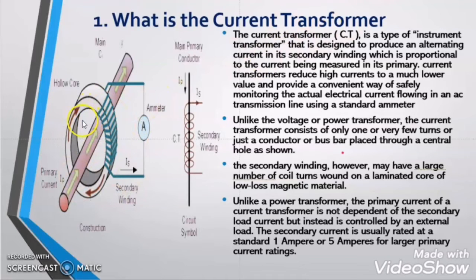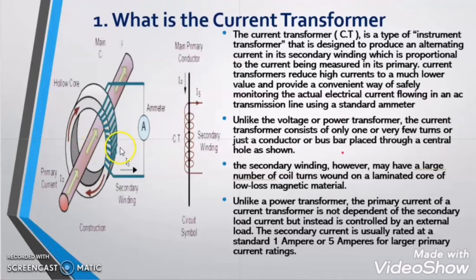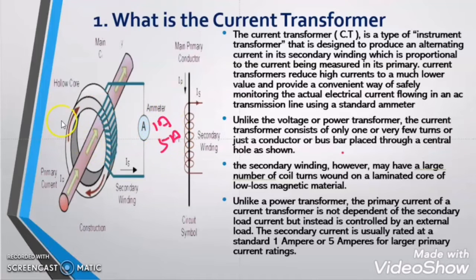To summarize: the current transformer is an instrument transformer used for monitoring or controlling electrical power. It has only the secondary winding; the primary winding is the conductor whose current we need to measure. The CT is always a step-up transformer — stepping up voltage and stepping down current — meaning it has more turns in the secondary winding, and the primary side is either one or two turns. The secondary winding current of the current transformer is always either 1A or 5A — this is standard.